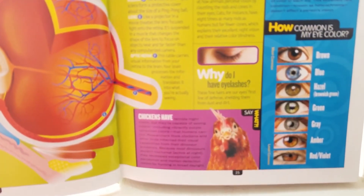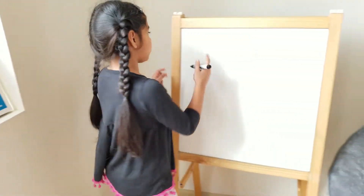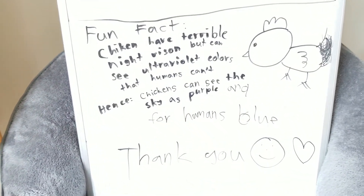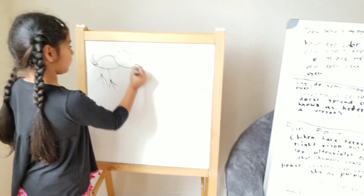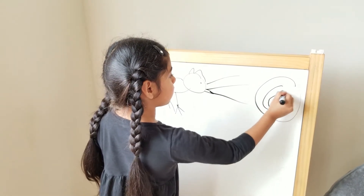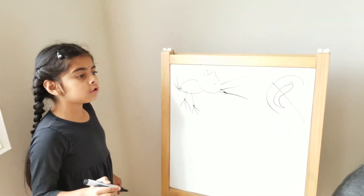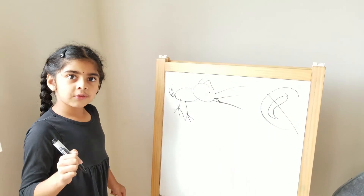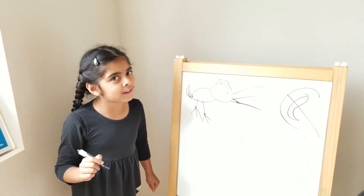So do you know a fun fact? Even chickens have very terrible night vision. They have very, very, very terrible night vision. But we are so blessed — they can see ultraviolet colors like purple. So they can see the sky as purple, while for us it looks blue.